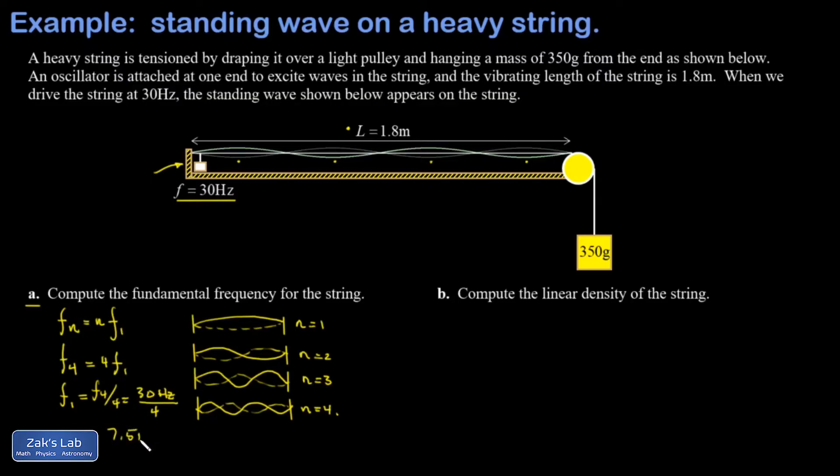What this means is if we tune our oscillator to seven and a half hertz, we'll just see the center of the string flopping up and down as the only antinode. In part B we're asked to compute the linear density of the string, and there are two parts coming together in this question.